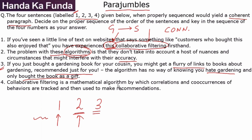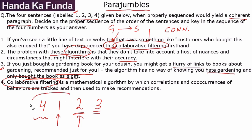Statement four says: 'Collaborative filtering is a mathematical algorithm in which correlations and co-occurrences of behaviors are tracked and then used to make recommendations.' This is very clearly introducing the topic of collaborative filtering, so it must come first. This is a very straightforward question and the answer is clearly 4, 1, 2, 3.